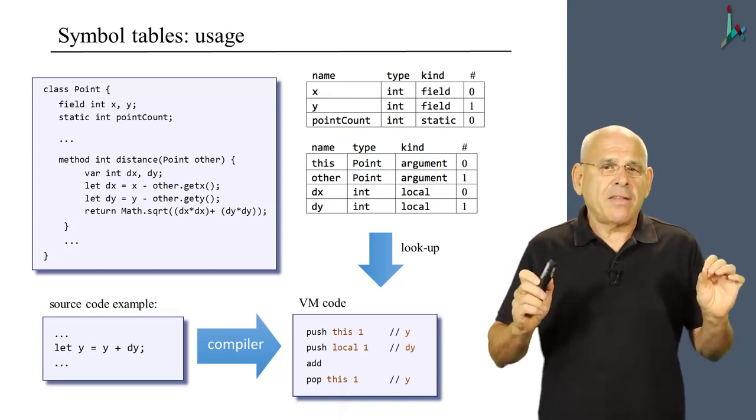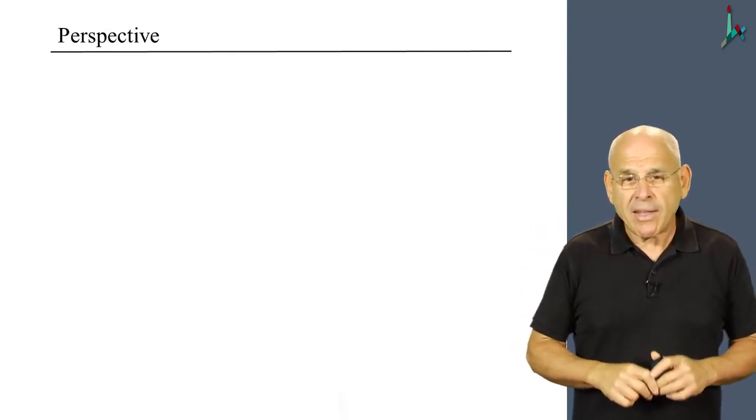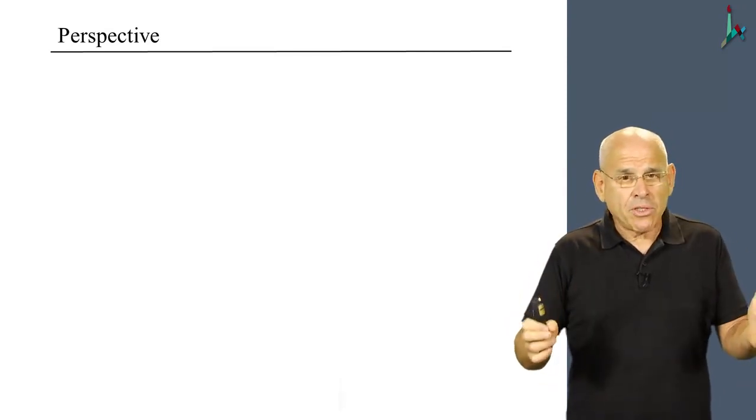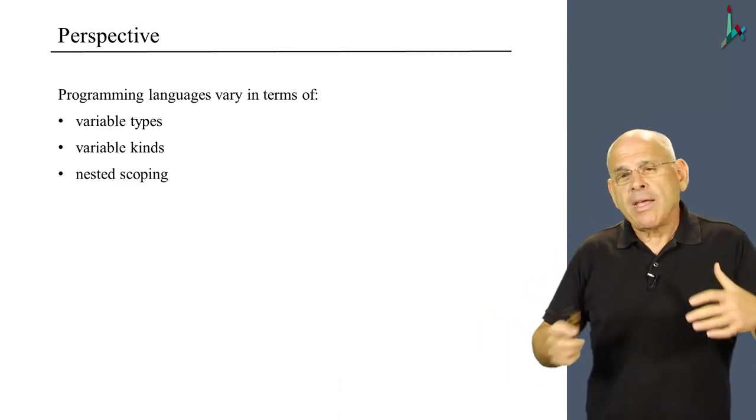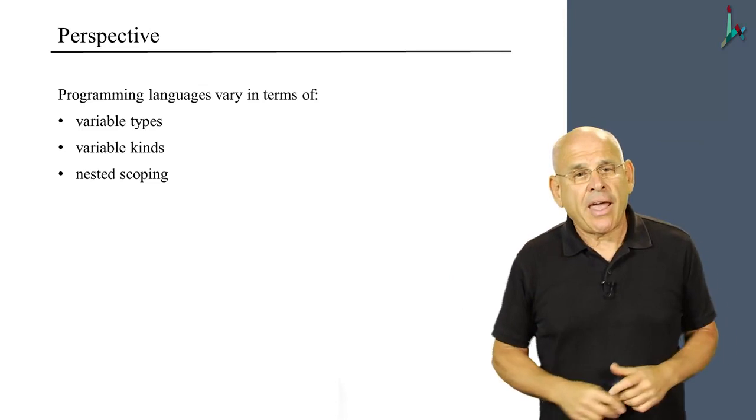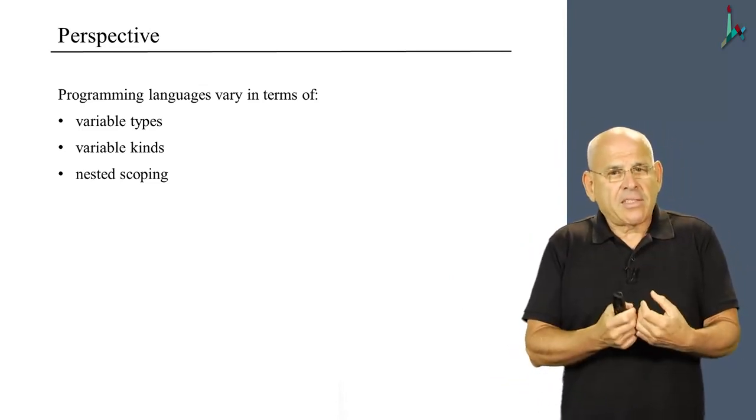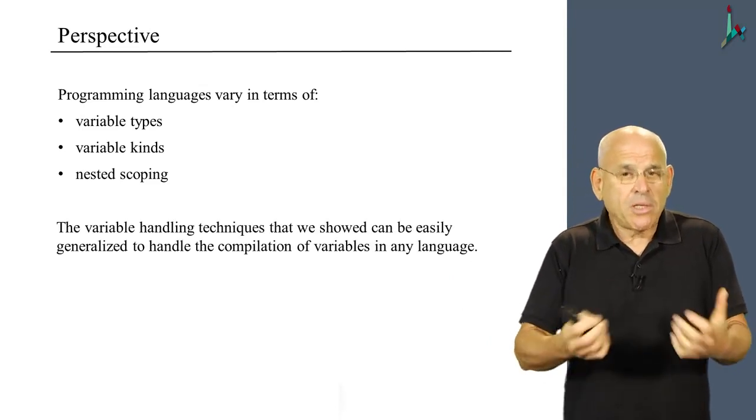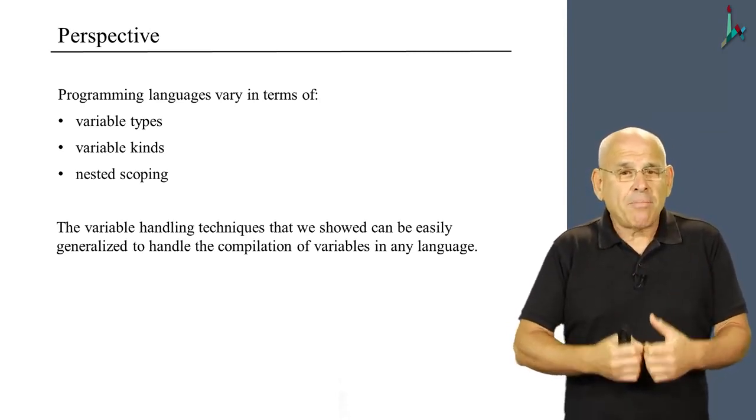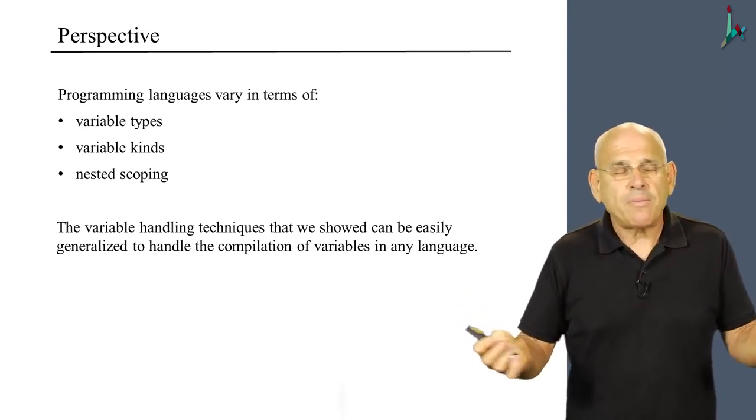Now, I'd like to end this unit with several very general observations about handling variables in programming languages in general. Now, high level programming languages vary in terms of how they feature different variable types, different kinds, and different scoping rules. Now, the techniques that we discussed in this unit, most importantly, the symbol table generation and usage, these techniques can be easily extended to handle any number of possible variable types and kinds.